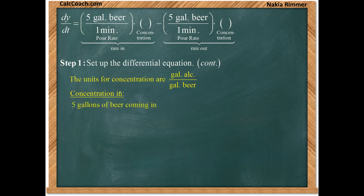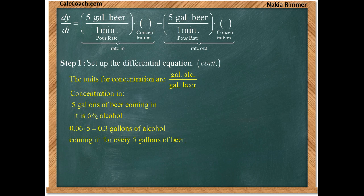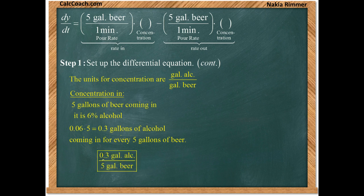Let's look at on our way in what's happening. We have five gallons of beer coming in, and we were told in the problem that it was 6% alcohol. So what is 6% of five gallons? Multiply 0.06 times 5, you end up with 0.3 gallons of alcohol. That's what's coming in for every five gallons of beer that are coming in. So then the concentration coming in will be 0.3 divided by five. That's our units, gallons of alcohol divided by gallons of beer.